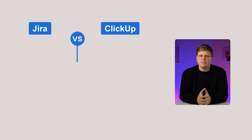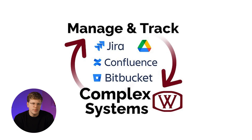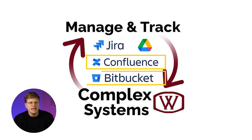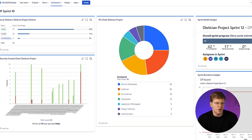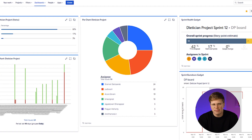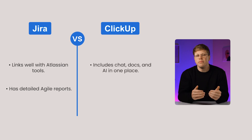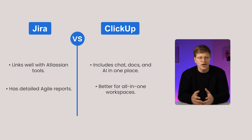Extra perks. JIRA is part of the Atlassian family, so it works smoothly with tools like Confluence and Bitbucket. It also has powerful agile reports, role-based permissions for security, and thousands of marketplace apps. ClickUp combines project management with built-in chat, documents, whiteboards, and mind maps. It also has AI features for quick summaries, task creation, and planning. Verdict: JIRA is best for deep agile reporting and developer tool integration, whereas ClickUp is best if you want an all-in-one workspace with more built-in collaboration tools.